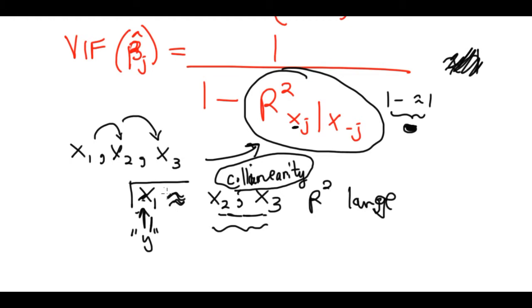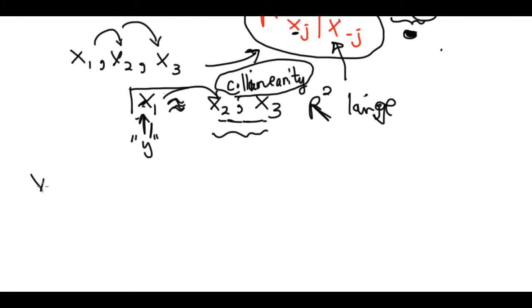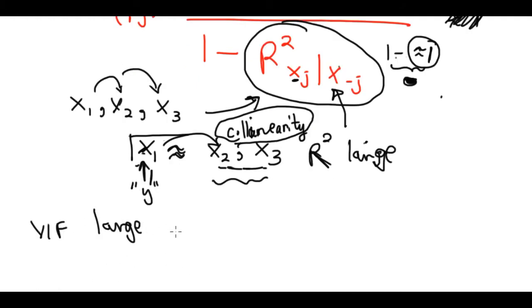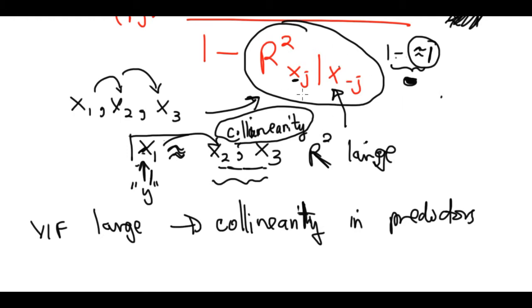We are measuring collinearity by regressing predictors on each other. A strong relationship produces a large R-squared. Substituting into the formula: one minus 0.9 gives 0.1 in the denominator, and one divided by 0.1 gives a large VIF. A large VIF means there is collinearity among the predictors.